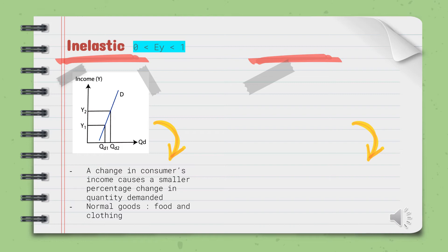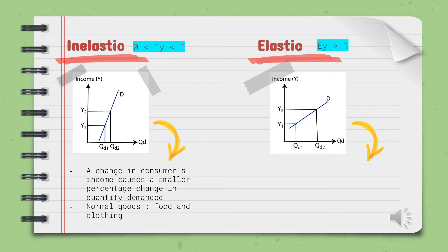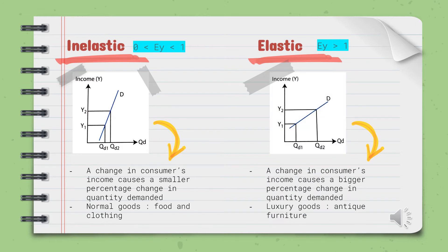The second is elastic income. Examples of goods include luxury goods such as antique furniture and sports cars. Elastic income is the opposite of inelastic income, in that the quantity demanded increases more than the increase in income. The value of elastic income is greater than 1.